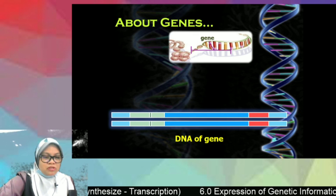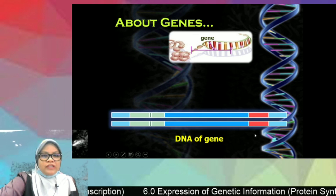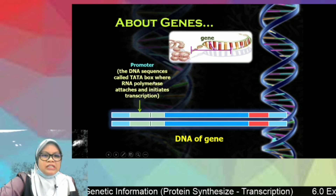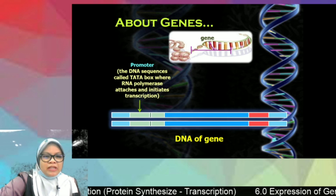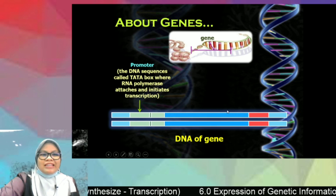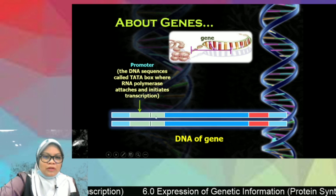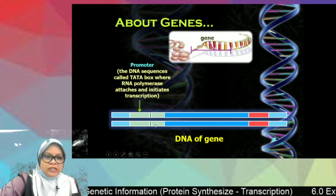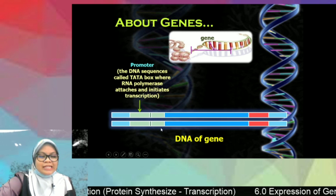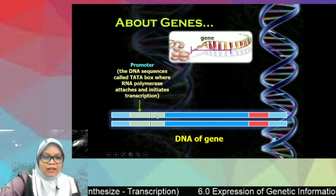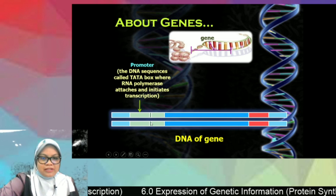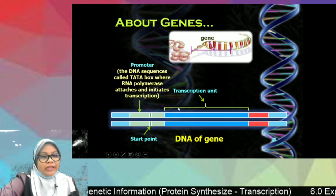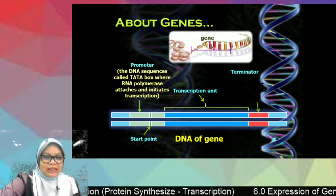Before starting the process of transcription, let's look at the DNA of a gene. There are three important regions to remember. First is the promoter — the place where RNA polymerase binds to initiate transcription. The promoter usually has a TATA sequence, which is why it is also known as the TATA box. Second is the transcription unit — the region that will be transcribed by RNA polymerase. Third is the terminator — the ending point of transcription.